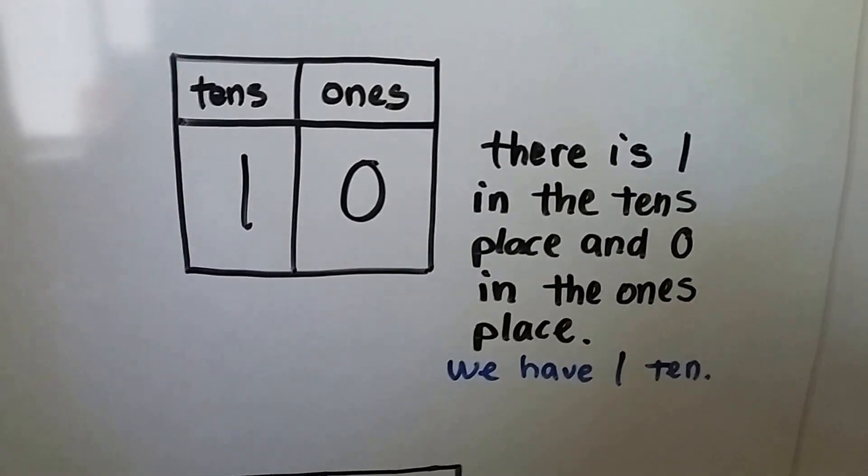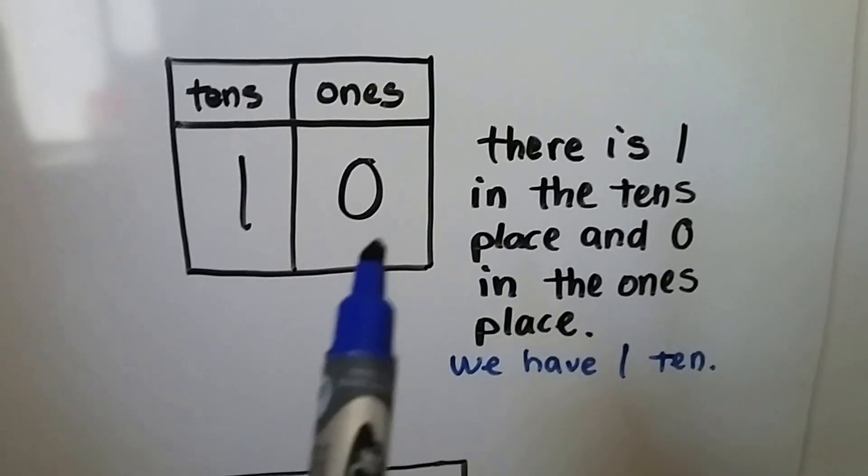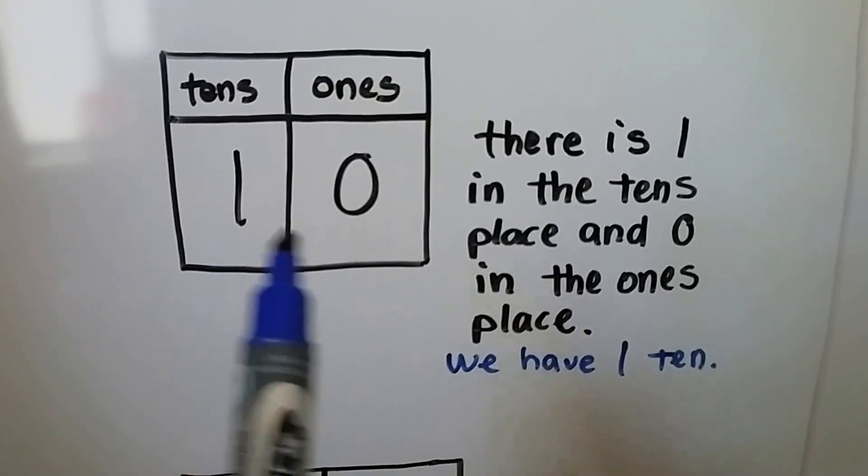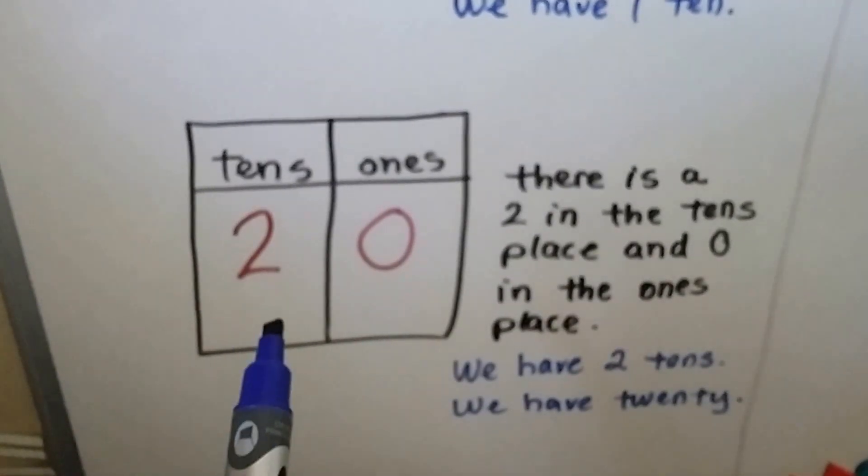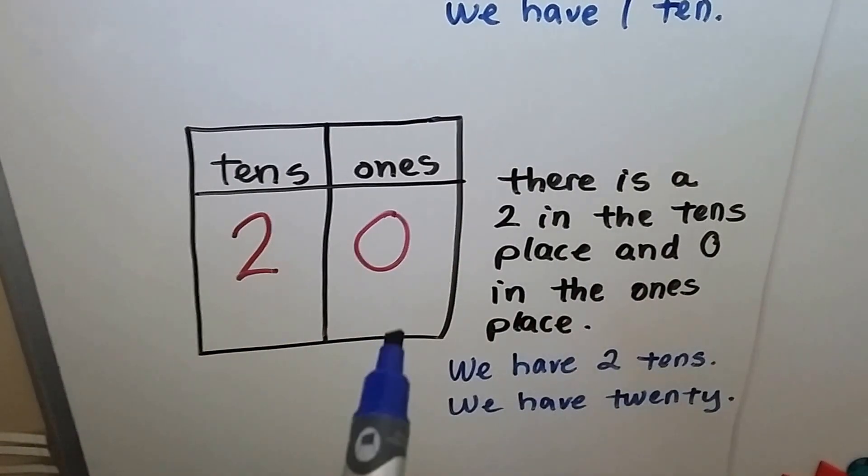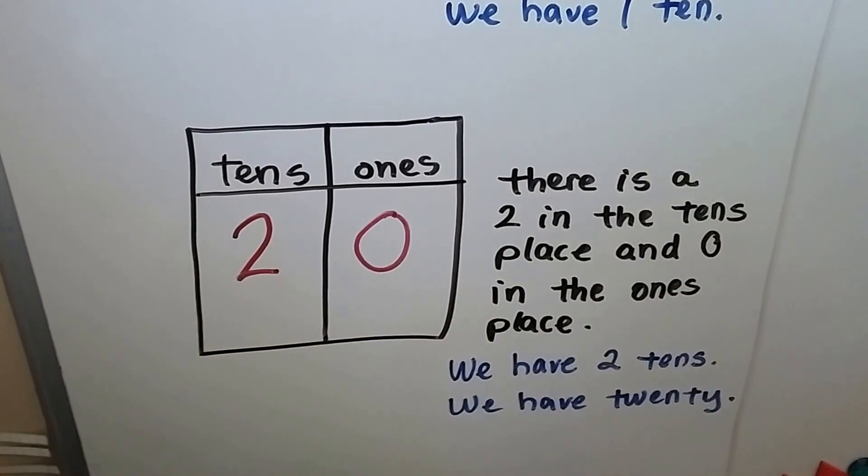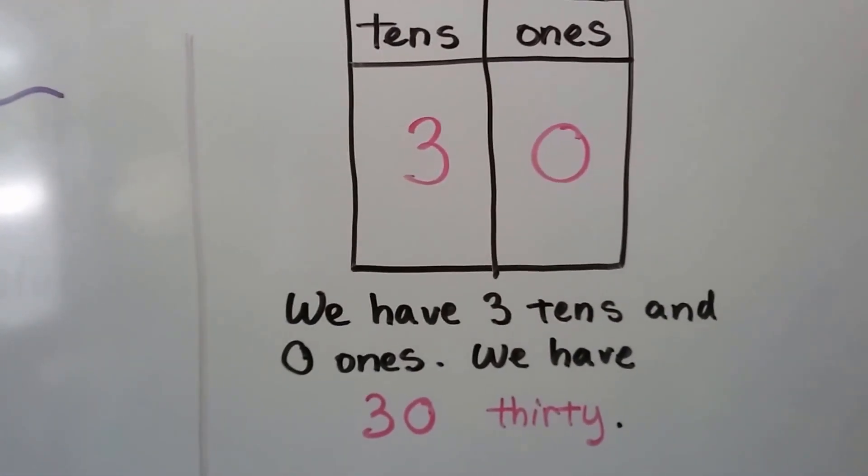There is one in the tens place and zero in the ones place. We have ten, one ten. Now there's a two in the tens place and zero in the ones place. We have two tens. We have twenty. We have three tens and zero ones. Now we have thirty.